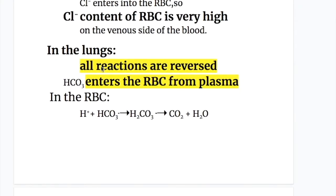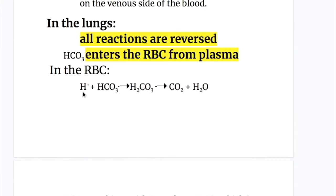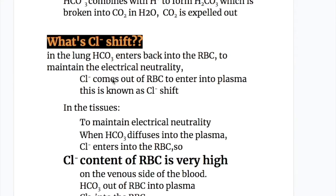What happens in the lungs? All reactions are reversed. Bicarbonate enters the RBC from the plasma, and in the RBC, bicarbonate combines with hydrogen ions to form carbonic acid, which breaks into carbon dioxide and water. Carbon dioxide is then expired out of the lung. For the chloride shift: in the lungs, bicarbonate enters back into the RBC, and to maintain electrical neutrality, chloride comes out of the RBC into the plasma. This is known as the chloride shift.